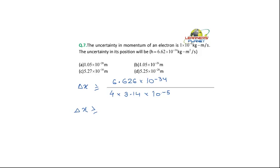And we will be getting the uncertainty in position to be 5.2 into 10 to the power minus 30 meters, right? So what is our right answer? It is C. So this was simple question, students. You need to just put the values in the formula.